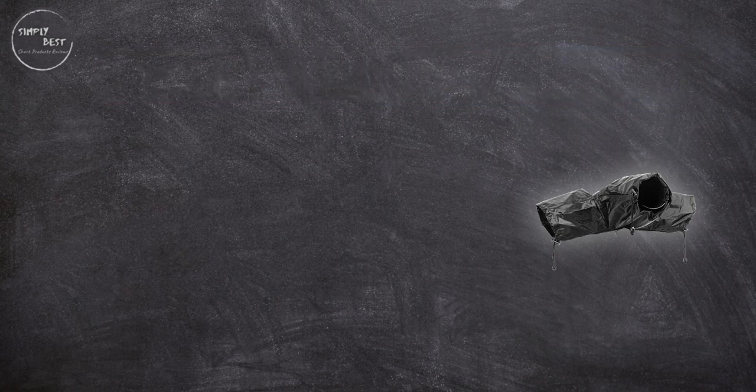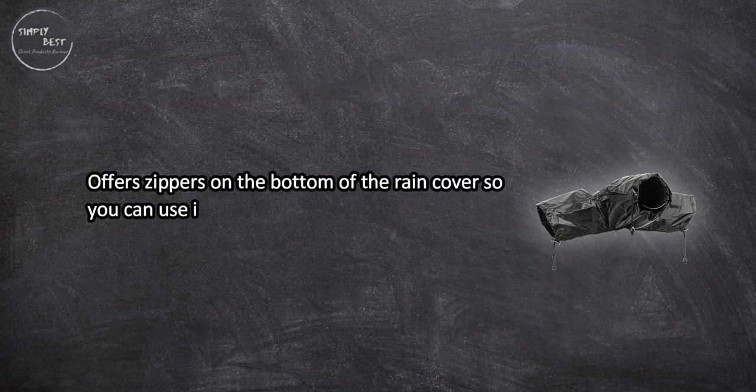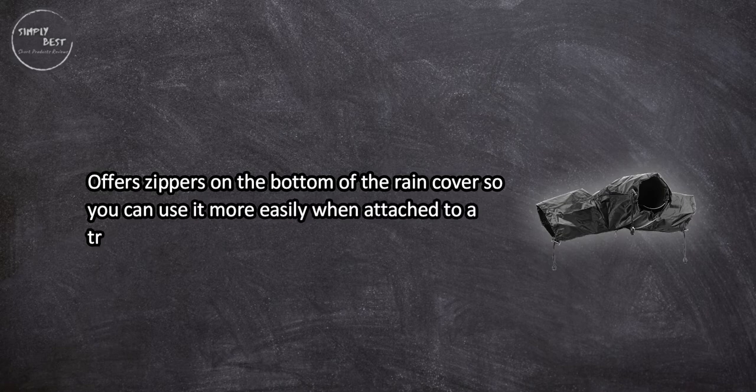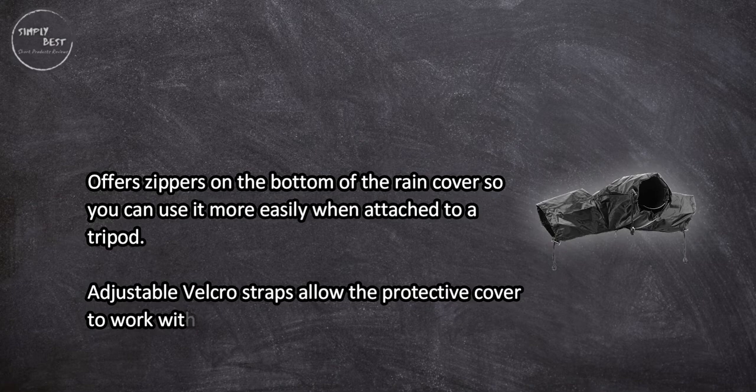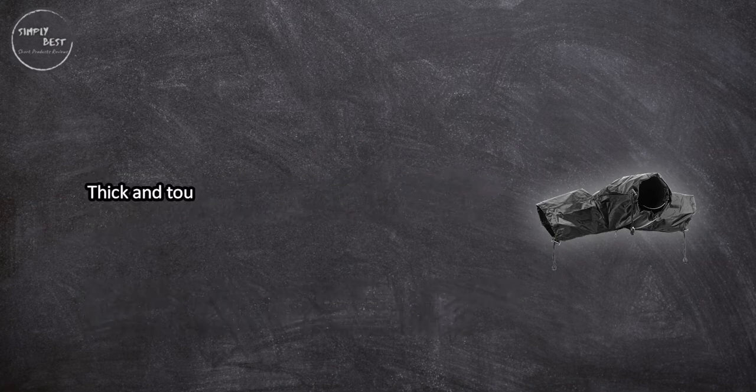Offers zippers on the bottom of the rain cover so you can use it more easily when attached to a tripod. Adjustable velcro straps allow the protective cover to work with camera lenses of different sizes.